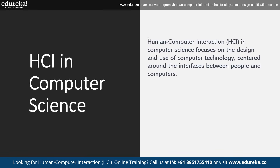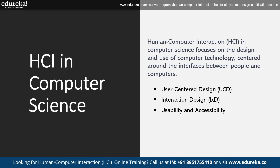HCI in Computer Science focuses on the design and use of computer technology centered around the interfaces between people and computers. Key aspects include user-centered design — emphasizing a user-centric approach to ensure systems are usable and accessible — and interaction design, which explores how users interact with computers to provide a good user experience. Usability and accessibility aim at making systems easy to use, efficient and enjoyable, evaluated through techniques such as heuristic evaluation, cognitive walkthroughs and usability testing.